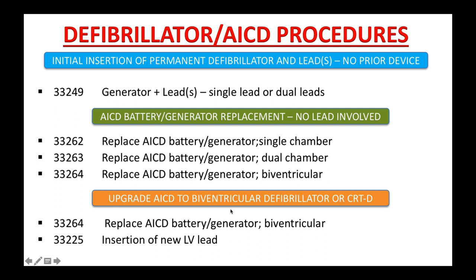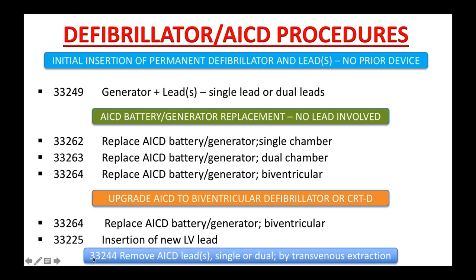For an upgrade to a CRT-D biventricular defibrillator, use two codes: 33264 for the biventricular generator replacement, and 33225 for the insertion of the new LV lead. If the lead needs to be removed due to infection or other complications, use 33244 for removal of an AICD lead — single or dual — by transvenous extraction. That is all you need to know for the CPC exam, COC exam, and CCSP exam.